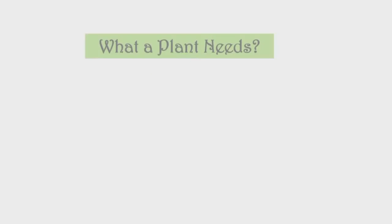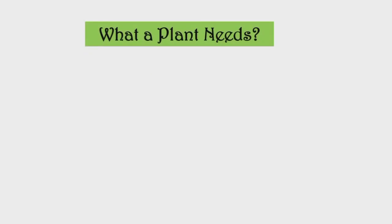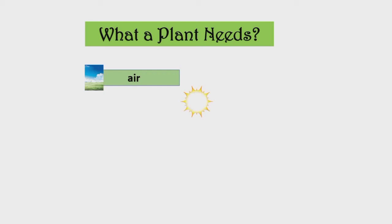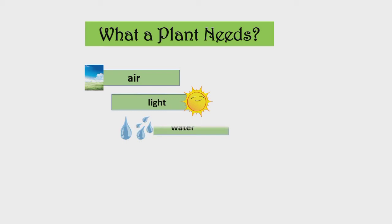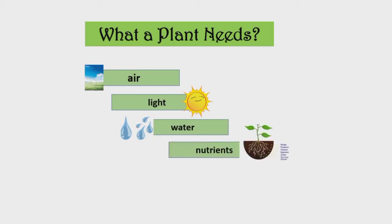Now it's time for us to discuss more about the life cycle of plants. Do you still remember what a plant needs to survive? You have learned it in the previous grade. Yes, they need air, light, water, nutrients, and warmth.